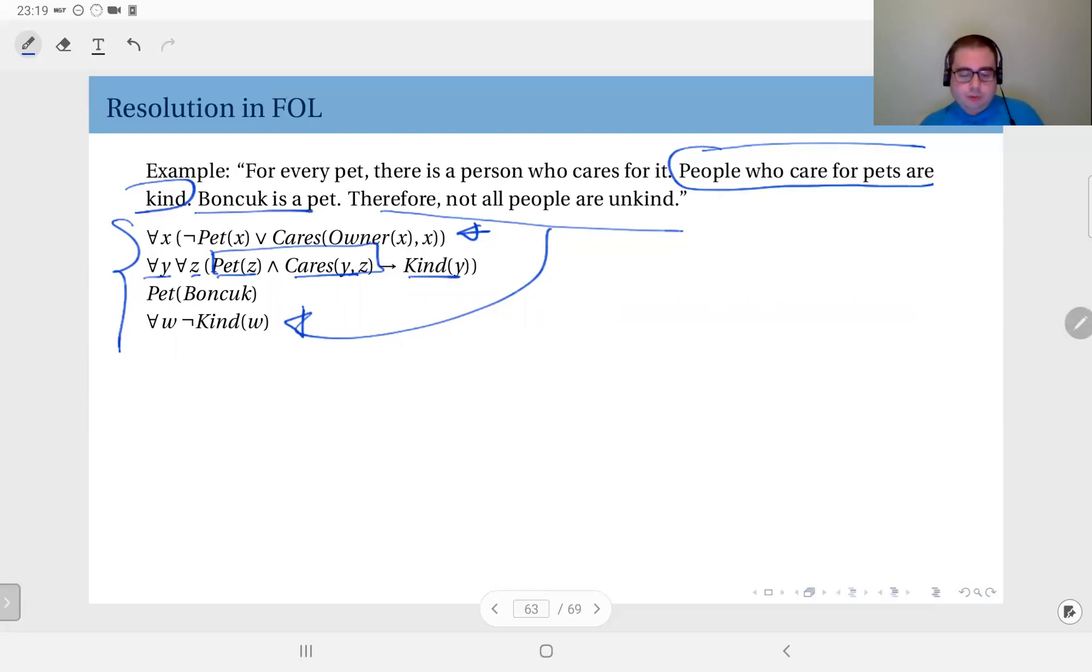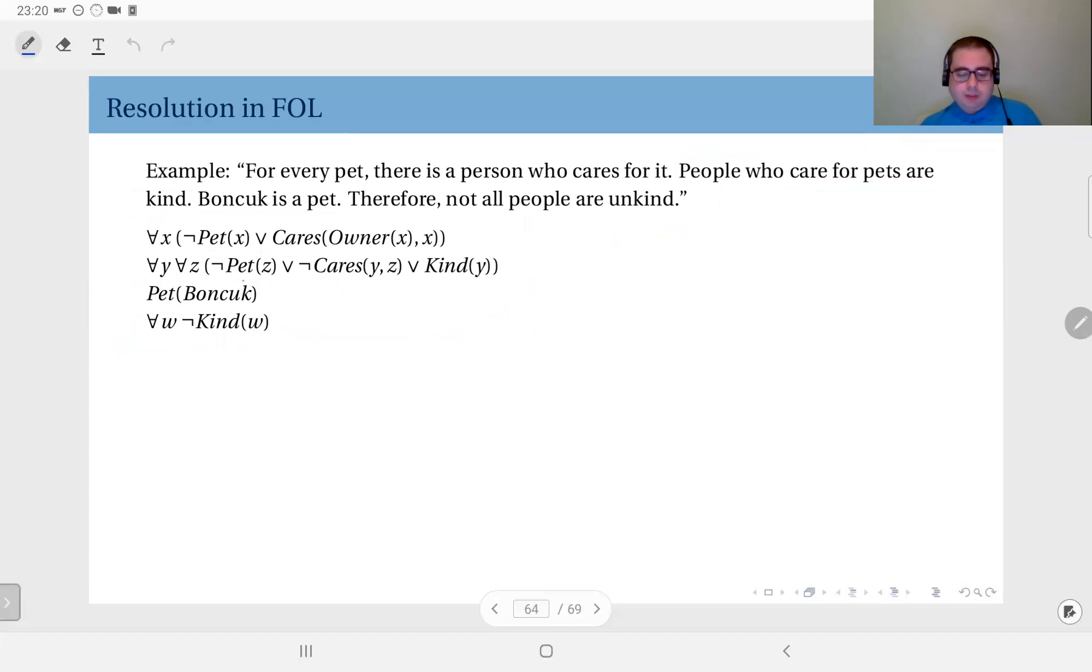It says not all people are unkind. If you negate it, you say all people are unkind, so for all w, ¬Kind(w). Now here I had an existential quantifier in this one, but I already have Skolemized it. In the remainder, I do not have an existential quantifier, so that makes my life easier. What I'm going to do is first eliminate this implication and then get rid of universal quantifiers. This gives me this statement. At this point, since all quantifiers are universal, I can just drop them. So this is what I get, and at this point I'm ready to start the resolution procedure.